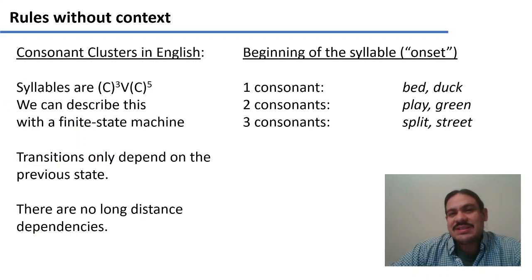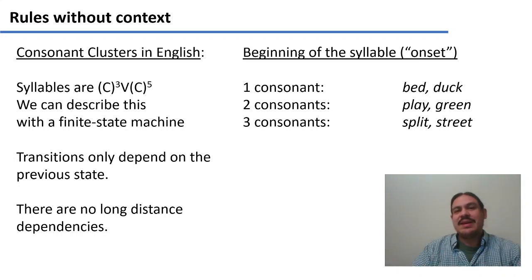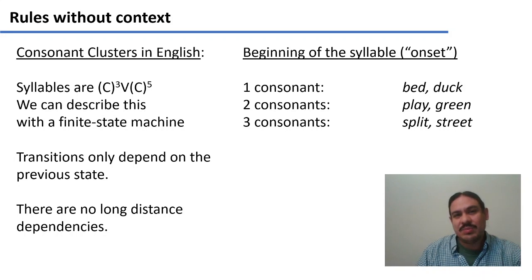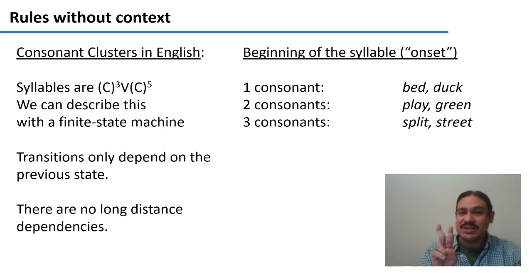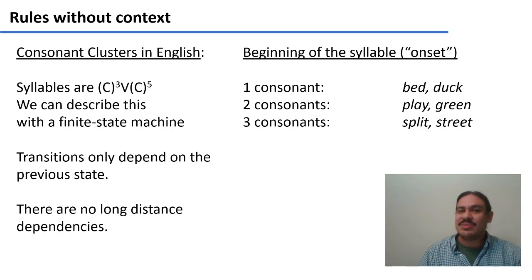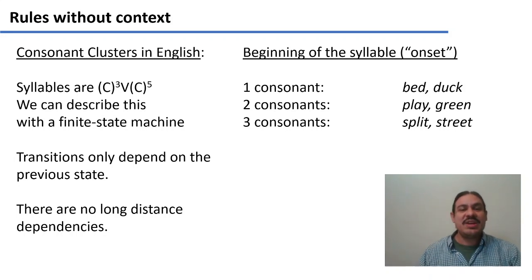Let's look at a second example: syllables in English. English has syllables, and we're going to focus on the consonants at the beginning of the syllable — what we call the onset. In English syllables, you can have onsets with one consonant, as in 'bed' or 'duck'; two consonants, as in 'play' and 'green'; or three consonants, such as 'split' and 'street'. In general, English syllables can have zero, one, two, or three consonants at the beginning.